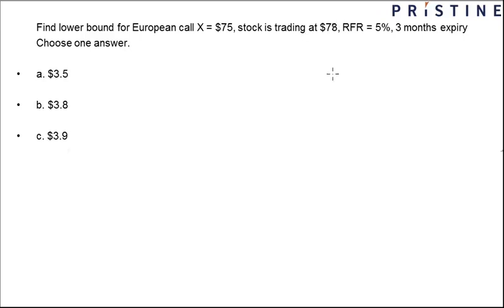So the simple formula for the lower bound of a call option is this. What we need to find out right here is what is the minimum price of the European call option. So the formula for that is: it can either be zero, or it can be the price of the stock—that is, the current trading price